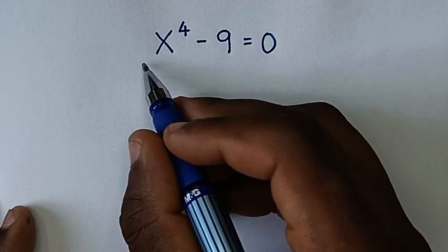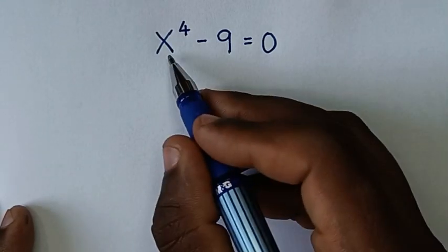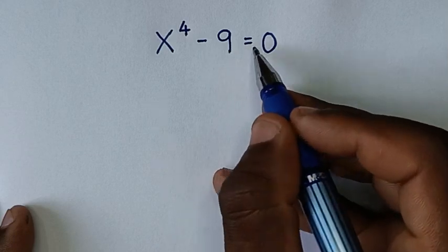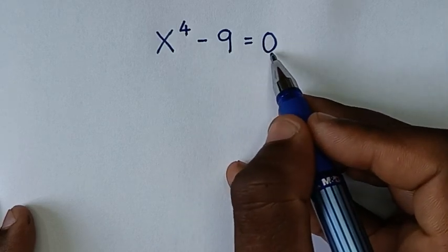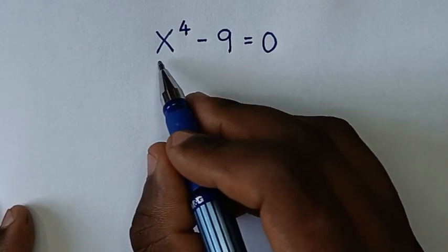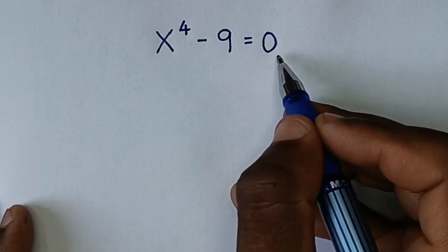You are welcome to solve this math problem, which is x to the power 4 minus 9 is equal to 0, to find the values of x from this equation.